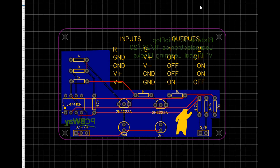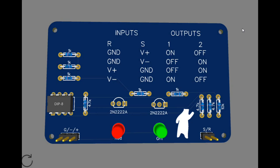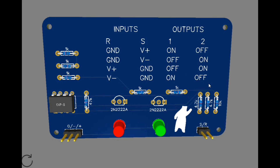If we take that schematic and turn it into a PCB, we get something that looks like this. There's our 3D view. You can see we have our truth table here for S, and LED 1 is red and 2 is green. The valid input conditions are: ground/V-plus, ground/V-minus, V-plus/ground, and V-minus/ground — never V-plus on both simultaneously.